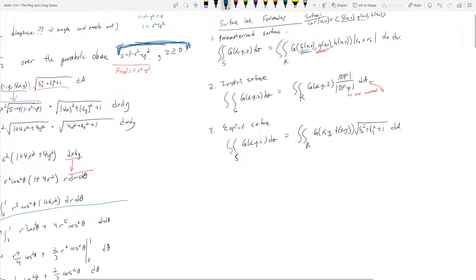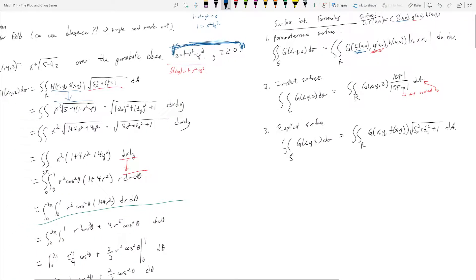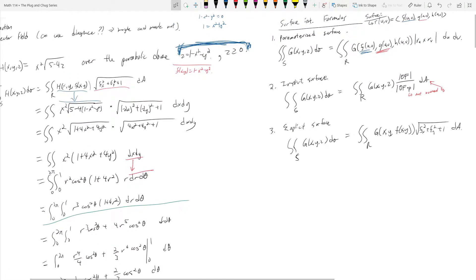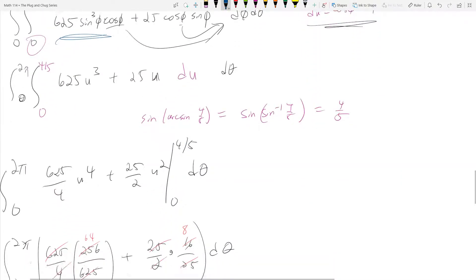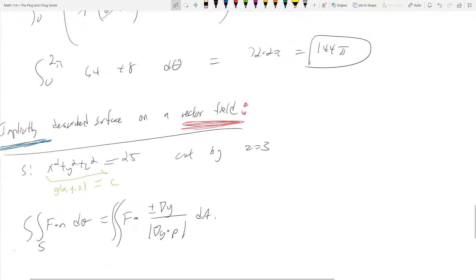Again, this is different from up here where we had an implicit surface, because in that implicit surface we're not over a vector field. This guy is a random scalar. However, the problem setup looks a lot like what we just did, but it isn't. It's different.